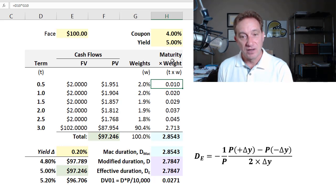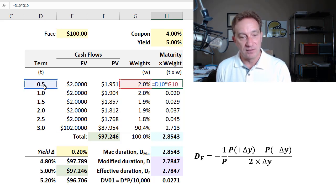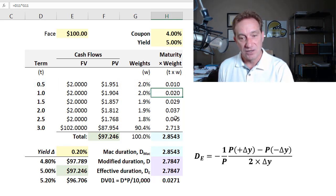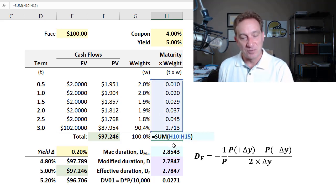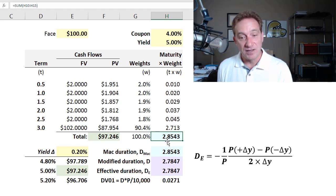And so we have here maturity times weight. You can see my notation term times weight, T times W. It's a simple product. Each row term times weight. If we sum these, we get the bond's weighted average maturity. For my bond here, it's about 2.85 years. The unit here, the units here is years.